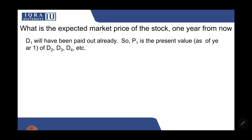Next, what is the expected market price of the stock one year from now? We want P1. Using the same formula, remember that you always use one year ahead dividend. If someone is purchasing the stock at the end of the first year, they'll start receiving dividends from D2 onward.